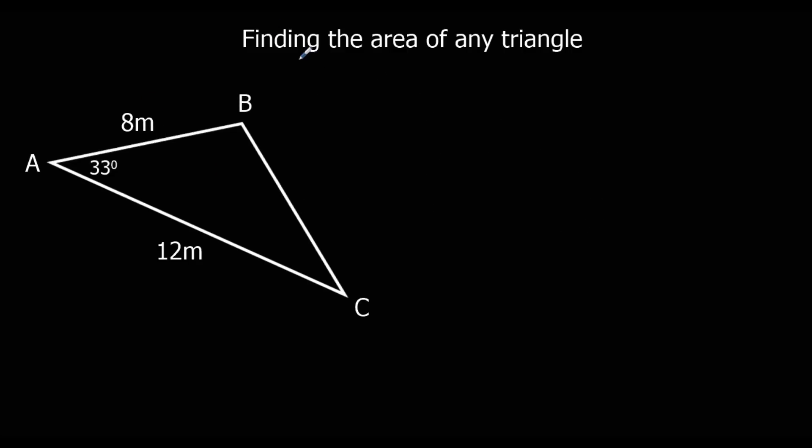Okay, let's look at another one. So the area of a triangle is given by area equals half a, b, sin C.